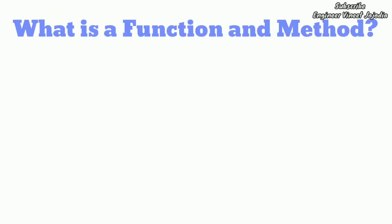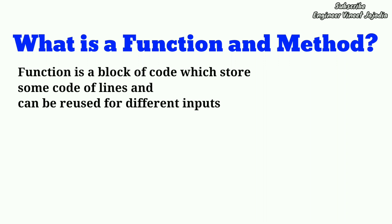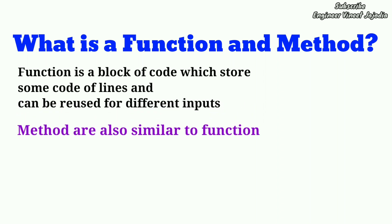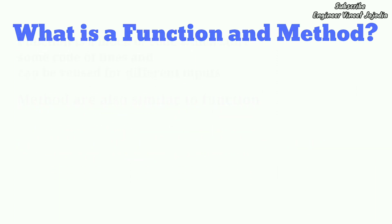The first objective is: what is a function? A function is a block of code which stores some lines of code, and that function can be reused for different inputs. Methods are also similar to functions, but there is a slight difference — a function is called independently, while a method is called with the help of a dependent. Let's see with an example what dependent and independent mean.